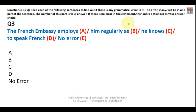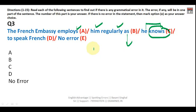Question three: 'The French embassy employs him regularly as he knows to speak French.' 'Employs' is correct because 'French embassy' is singular. 'As' is used as a conjunction of reason, equivalent to 'since' or 'because.' However, the verb 'knows' must be followed by a 'how to' construction — for example, 'I know how to drive,' 'I know how to sing.' So 'how to' is missing here. Your answer is D.